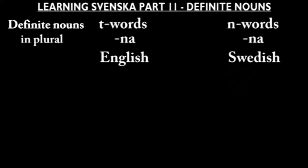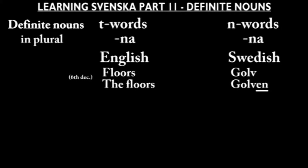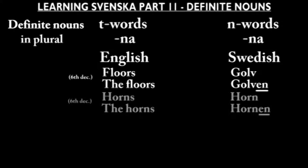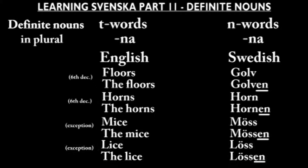The second exception is if a noun isn't part of the first five declinations that inflect nouns, then the definite plural will end with an -n, even if it's a t-word. Golv: golven. Hon: honen. Möss: mössen. Löss: lössen.